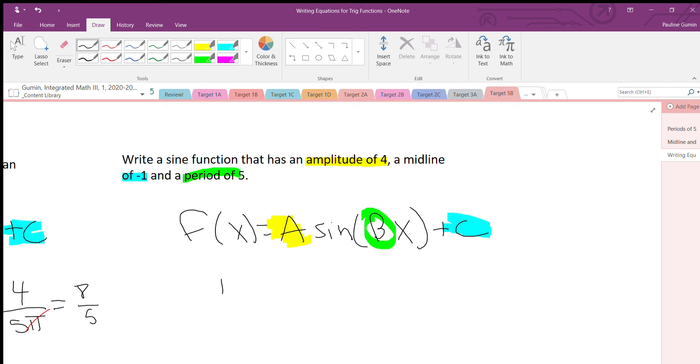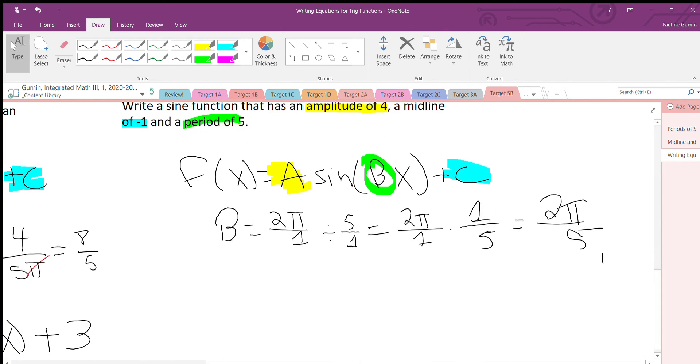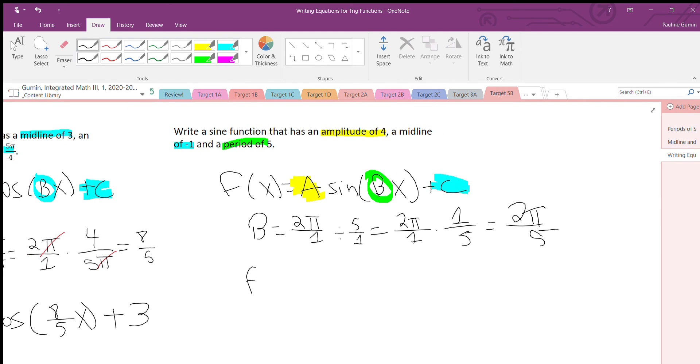B is 2π divided by my period, which is 5, which really becomes 2π times 1 over 5. There's really nothing I can reduce. So 2π over 5 will be my B value. And we are right about done. Our amplitude is 4 sine 2π over 5x. Our midline is negative 1. So I write minus 1. And that's it.